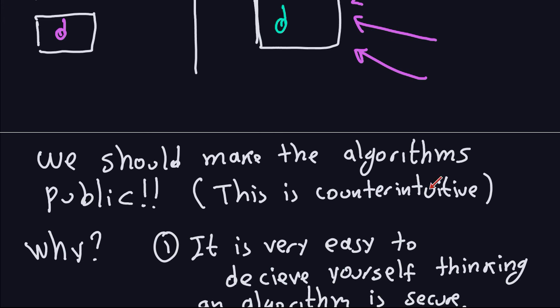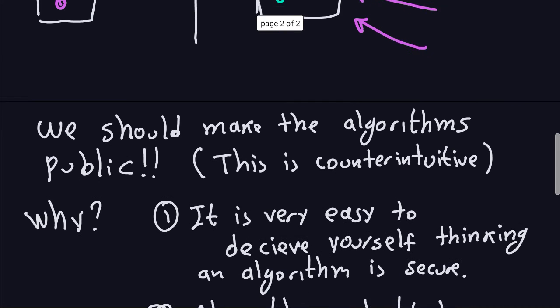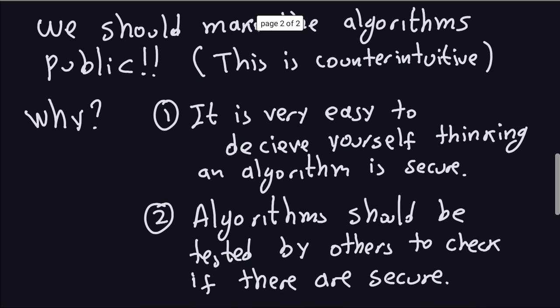Now, the idea is this: we should make the algorithms public. Of course, this is counterintuitive—it goes against the intuition. But why is that? I already mentioned that. It's very easy to deceive yourself thinking that an algorithm is secure if you are the only one doing that. This has happened many times in the industry. Some industry has kept the algorithms secret.